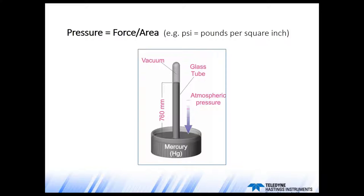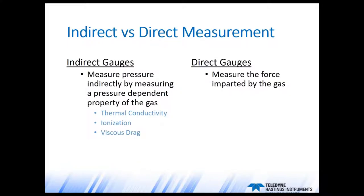Now I'd like to get into another topic: the characterization of gauges as being either direct or indirect. Pressure is defined as force per unit area — think pounds per square inch, or the old mercury column where atmospheric pressure pushes mercury up and you measure the height, 760 millimeters of mercury. Direct gauges measure the force that the gas imparts on some part of the gauge. Indirect gauges measure pressure by measuring some pressure-dependent property of the gas, such as thermal conductivity, ionization rate, or viscous drag.